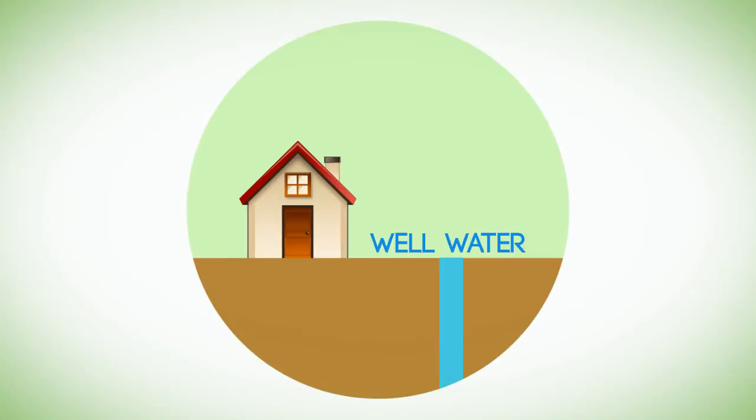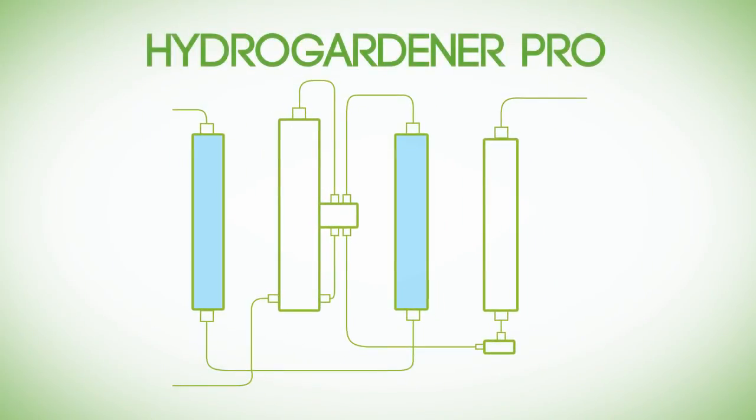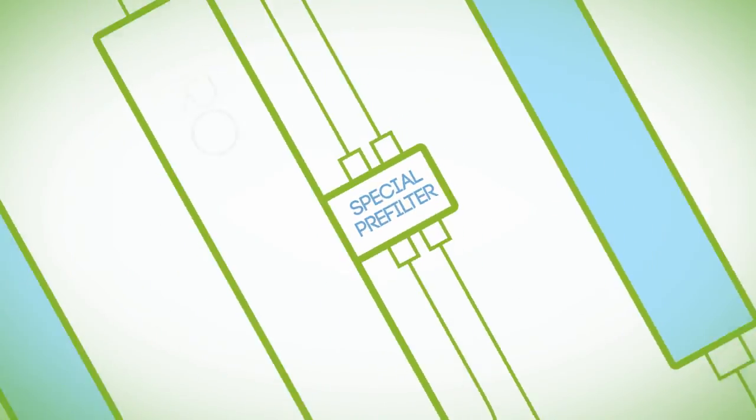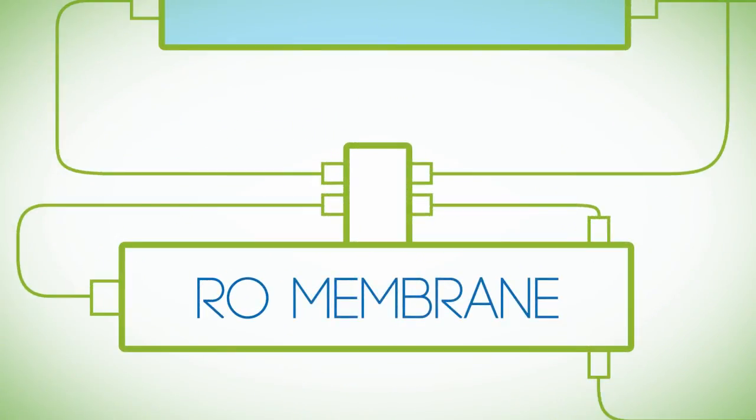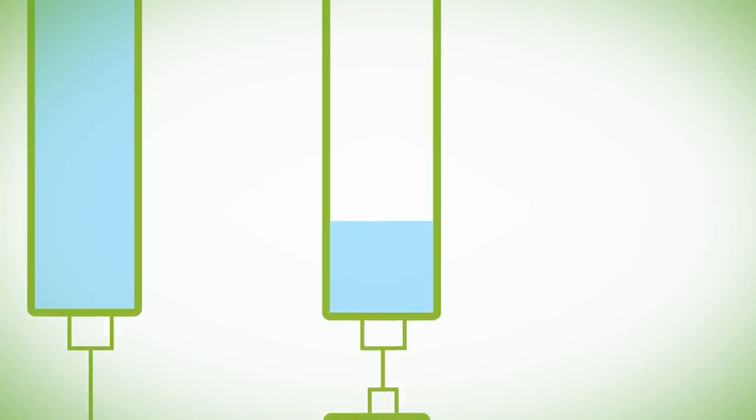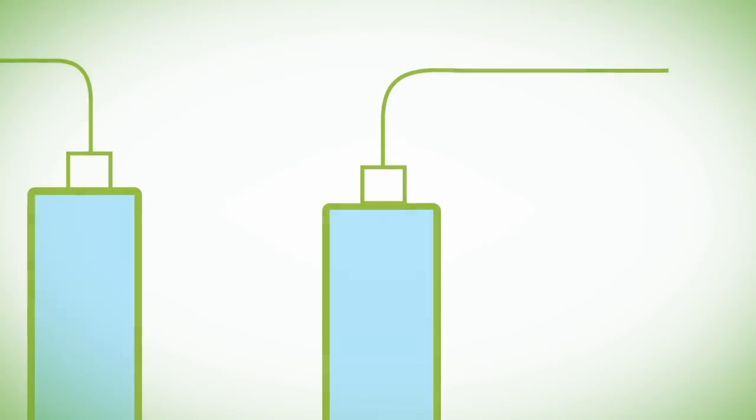The HydroGardener Pro for well water is identical to the HydroGardener except it contains a special pre-filter to remove iron, manganese and hydrogen sulfide, which would otherwise destroy the RO membrane. It also includes a non-electric permeate pump to reduce water waste and make the best use of the available water pressure.